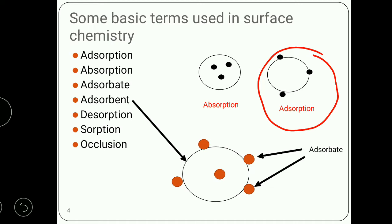When adsorbed gas molecules are removed from the surface, it is called desorption. When adsorption and absorption processes take place simultaneously, it is called sorption. And occlusion is when adsorption takes place on the surface of a metal, it is called occlusion.